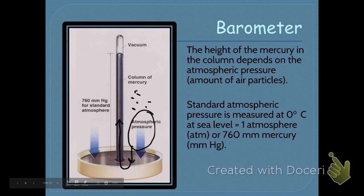The higher the amount of mercury in the tube, the more pressure there is. If there's less pressure, the downward force is smaller and that side will actually go down. The height of the mercury in the barometer tells you the atmospheric pressure.